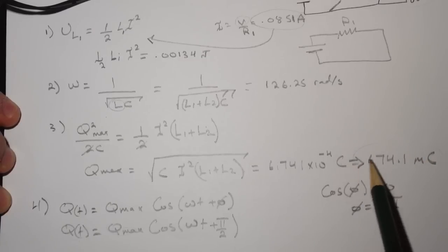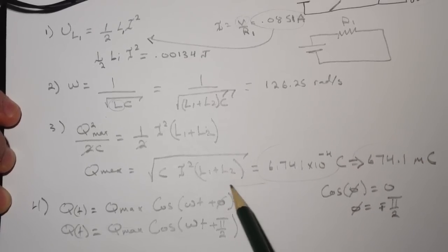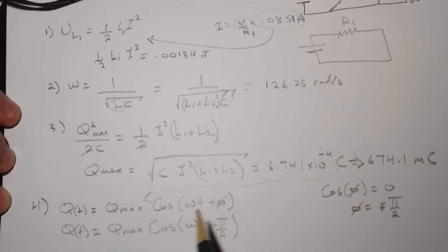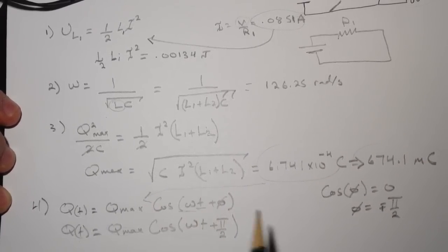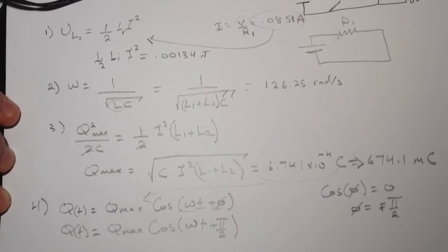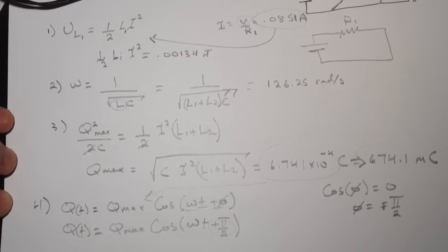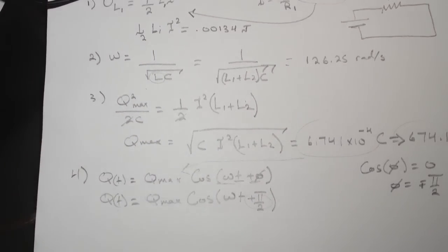This value you'll substitute it in this because this is in coulomb, and this is the omega we have. The time they gave us in the question and the phase is phi over 2.